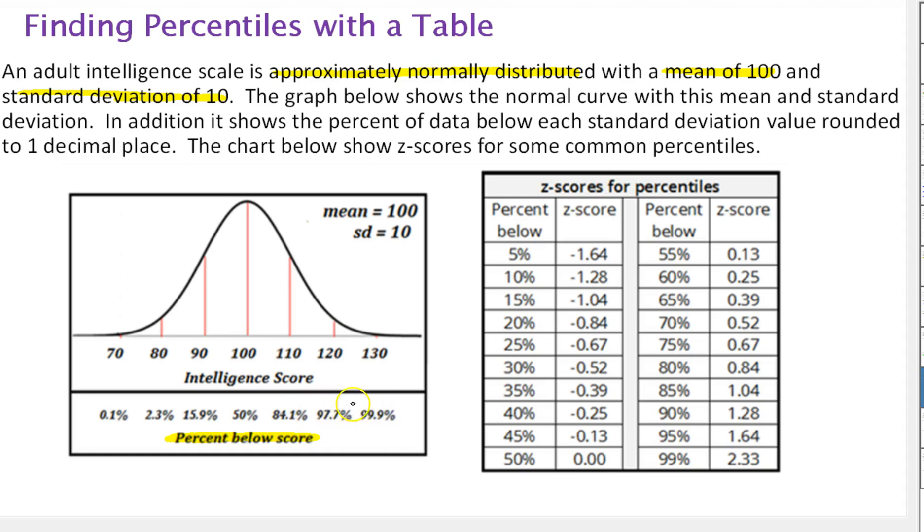But here, since these aren't exact, the standard deviations aren't whole numbers except for the 50%, we're just going to look at them as examples. So here, at 130, approximately 99.9% of the data lie below it. 97.7% lie below 120, which is two standard deviations above the mean. Only 0.1% of the data lie to the left of 70. So I computed these using our z-score calculator.